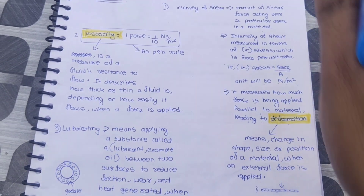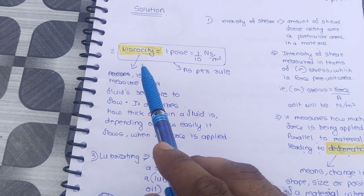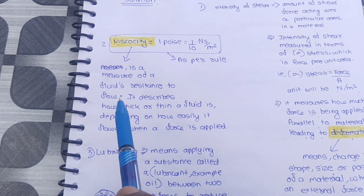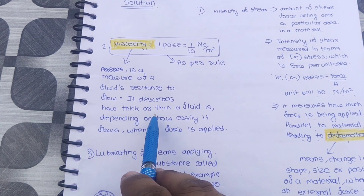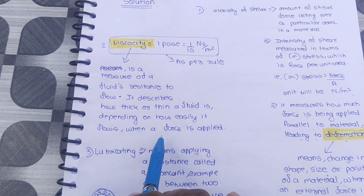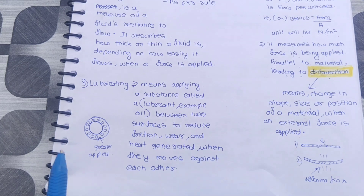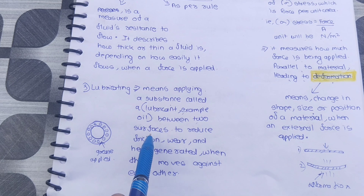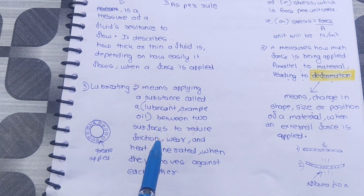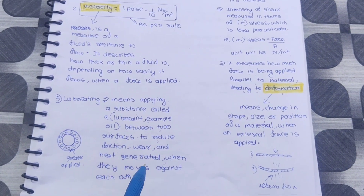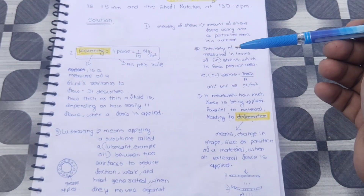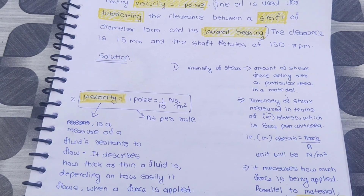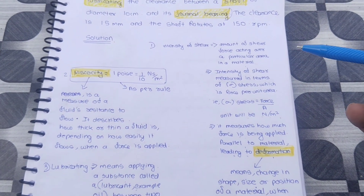Viscosity is a measure of a fluid's resistance to flow — it describes how thick or thin a fluid is depending on how easily it flows when a force is applied. Lubrication means applying a substance called lubricant, such as oil, between two surfaces to reduce friction, wear, and heat generated when they move against each other. These definitions are for understanding purposes.